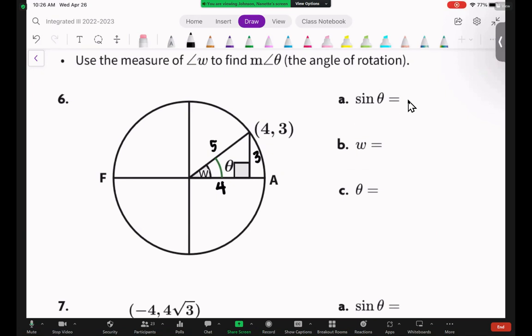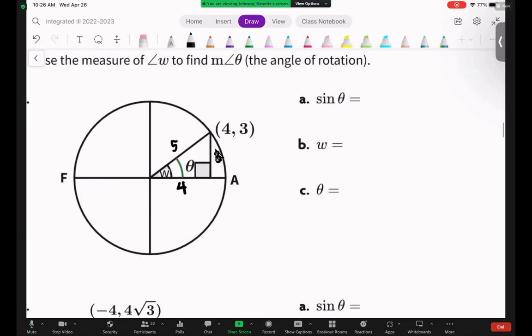So the sine of theta, according to what we found today, I mean, according to this picture here, what is sine of theta? What is the sine of theta in this picture? Very good. It's opposite over hypotenuse. That's 3 fifths. Very good.